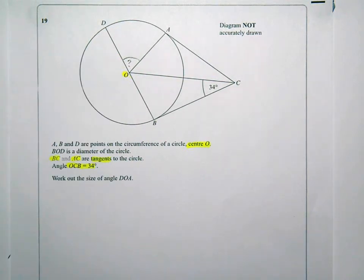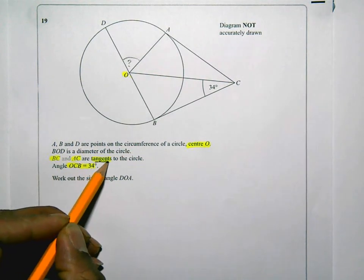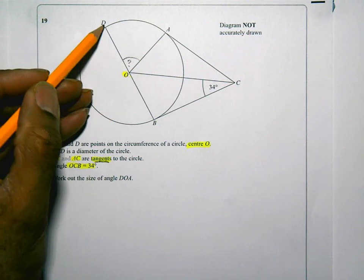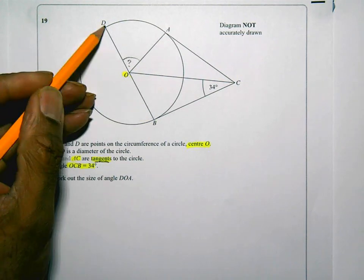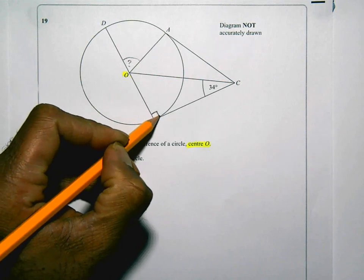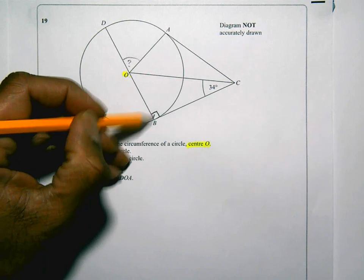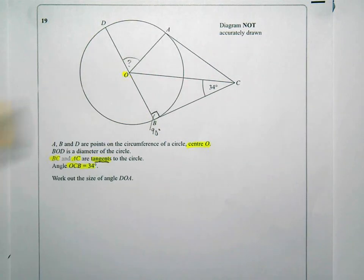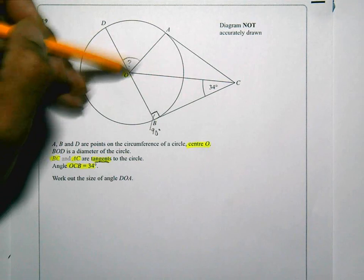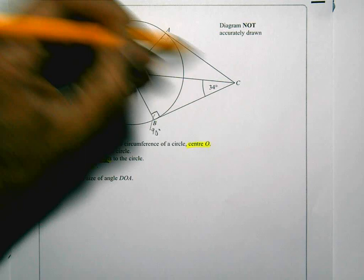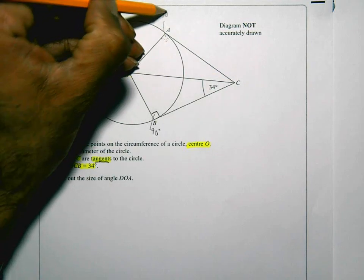Now, looking around this question, because they said whenever they say the word tangent in these questions, it's quite standard. A tangent is at 90 degrees, or is 90 degrees to a diameter or radius. That there is a diameter. So the tangent BC is going to be at right angles there. So I'm putting a right angle in there. Maybe I should just draw a line to say 90 degrees. And OA, that's a radius. So that's going to be 90 degrees as well to the tangent AC. So that is 90 degrees also.